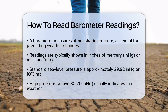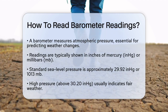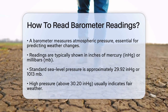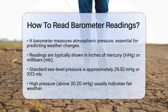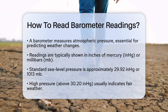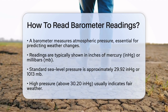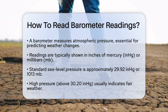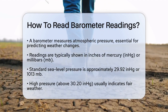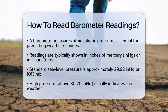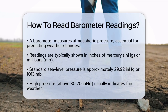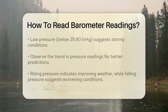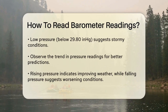To start reading your barometer, note the current pressure reading. This could be shown by a needle on an analog model or a digital display. High pressure, typically above 30.2 inHg, usually indicates fair weather, while low pressure, below 29.88 inHg, suggests stormy conditions.